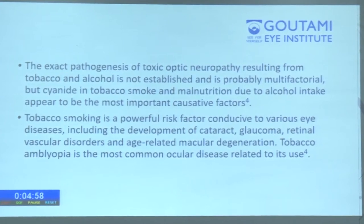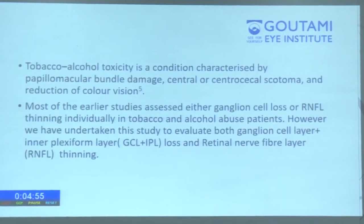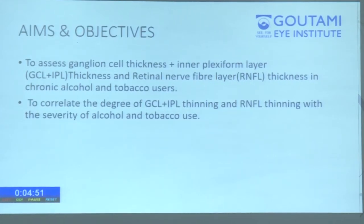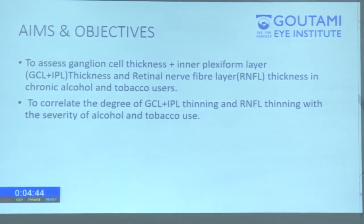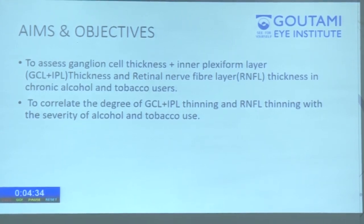Tobacco amblyopia is the most common ocular disease related to tobacco use. Our aim and objective of the study is to assess ganglion cell layer plus inner plexiform layer (GCL+IPL) thickness and retinal nerve fiber layer (RNFL) thickness in chronic alcohol and tobacco users, and to correlate the degree of GCL+IPL thinning and RNFL thinning with the severity of alcohol and tobacco use.